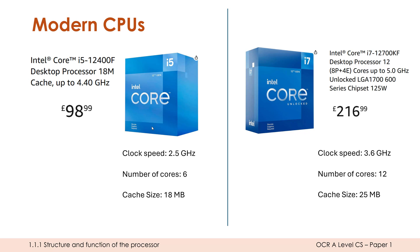All the things you've learned about do apply to modern processors. We can look at two modern ones here and see the same stats we've been learning about: clock speed, number of cores, and cache size.